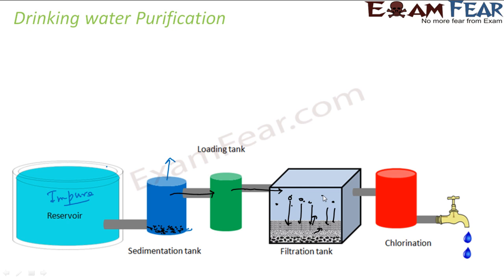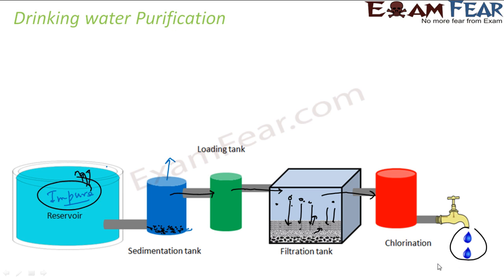Once we get purer water out of the filtration tank, we do chlorination. Chlorination kills bacteria. We add some chlorine, which kills all the bacteria, and then we get pure drinking water. The charged sand particles attract impurities from the water — this is the typical process by which impure water from a lake or river is purified and delivered to homes.